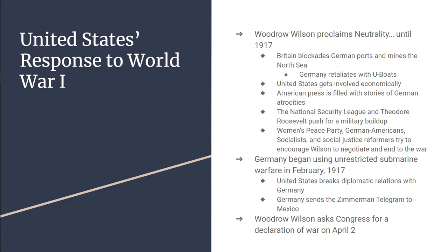Woodrow Wilson is going to proclaim the United States neutral and asks the people to remain neutral in both thought and action. Most Americans believe the country should stay out of the war, but very few are neutral in thought. There are about 11 million Americans who did support Germany and Austria, but most Americans were anti-German because they thought Kaiser Wilhelm II was arrogant.